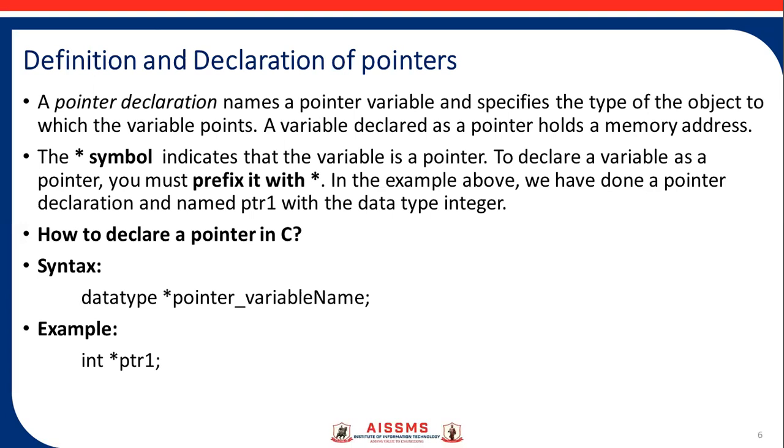How to declare a pointer in C? The syntax of the declaration of pointer is: data_type* pointer_variable_name. For example, int* ptr1.